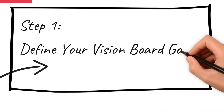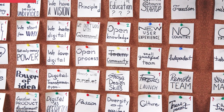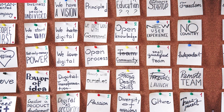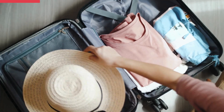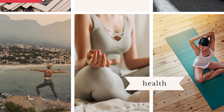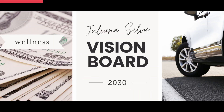Step number one is to define your vision board goals. Before you start designing, take a moment to get clear on your goals. Choose your focus areas: career, business, financial goals, health, wellness, travel, experiences, relationships and family, personal growth, and mindset.